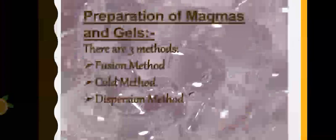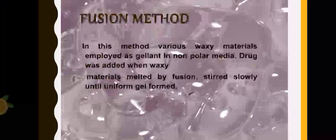Now preparation of magmas and gels is basically through the same method, so we have fusion method, cold method, and dispersion method. In fusion method, waxy material is used as a gelling agent and it is added to the non-polar medium. We basically melt the waxy materials and they are fused with each other. That's why this is known as fusion method. Then we add the drug substance and stir it slowly until a uniform gel is formed.